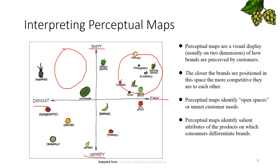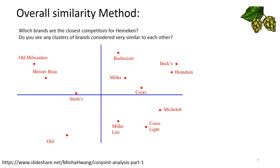On which consumers differentiate brands — with interpretations and ideas in mind, here is an example of the overall similarity method. We can try to answer two questions. First, which brands are the closest competitor for Hanneken? The answer is Bex. Second, do you see any cluster of brands considered very similar to each other? The answers are indicated inside the circles.